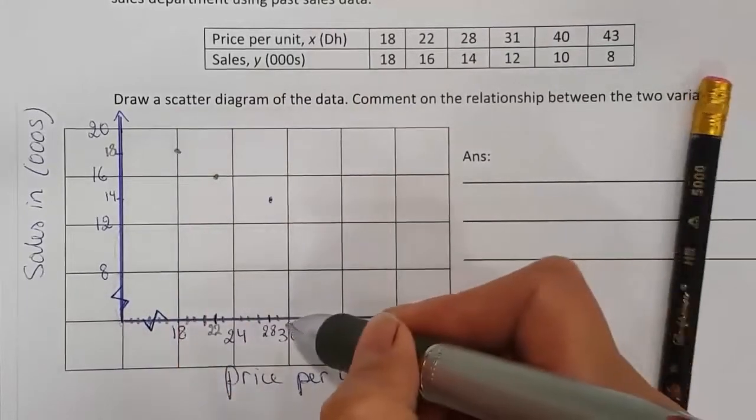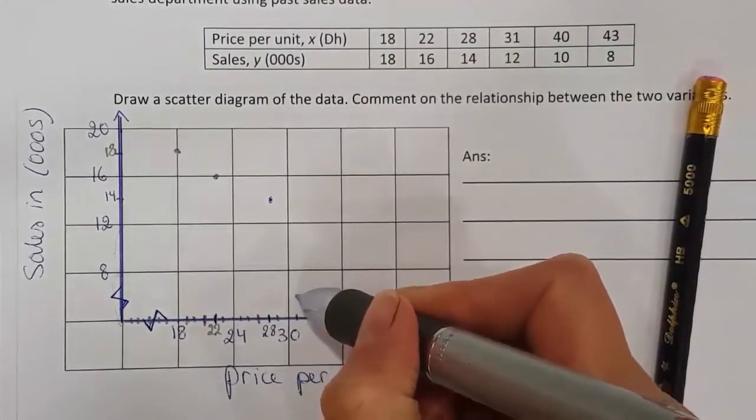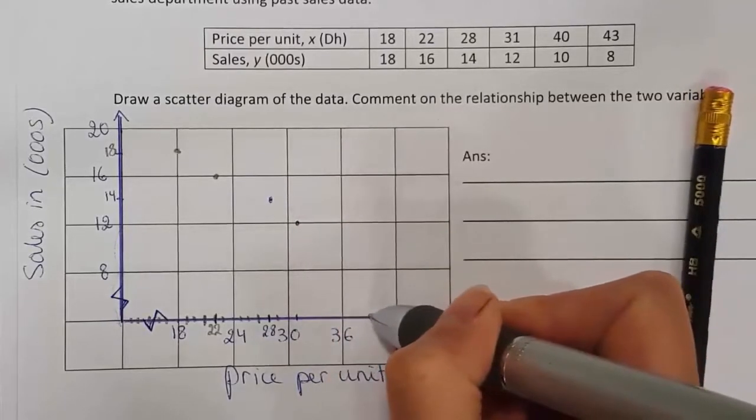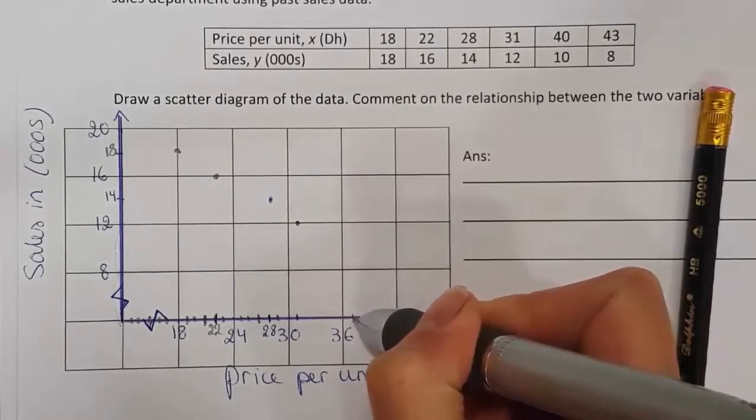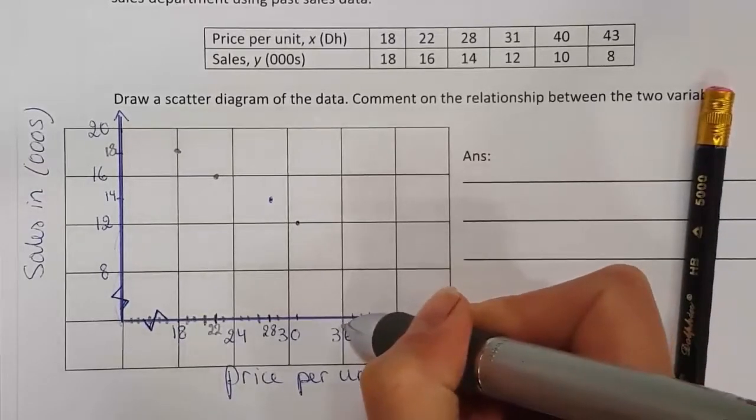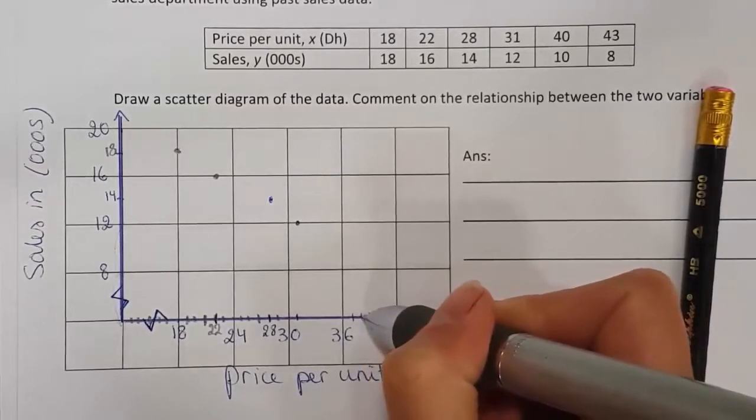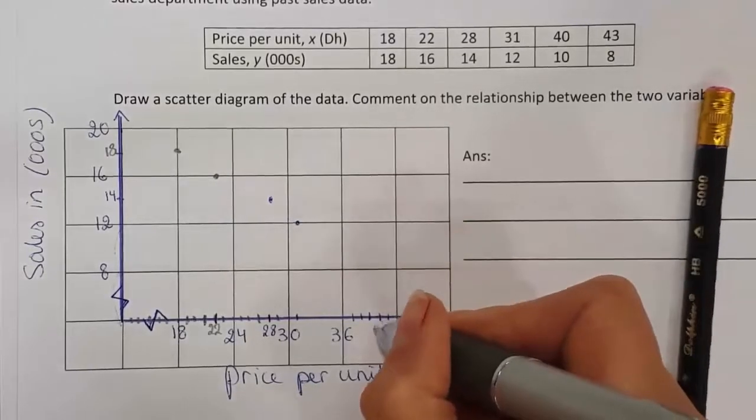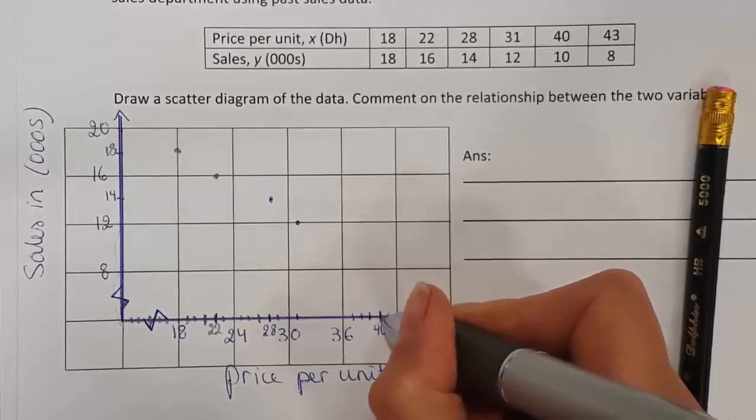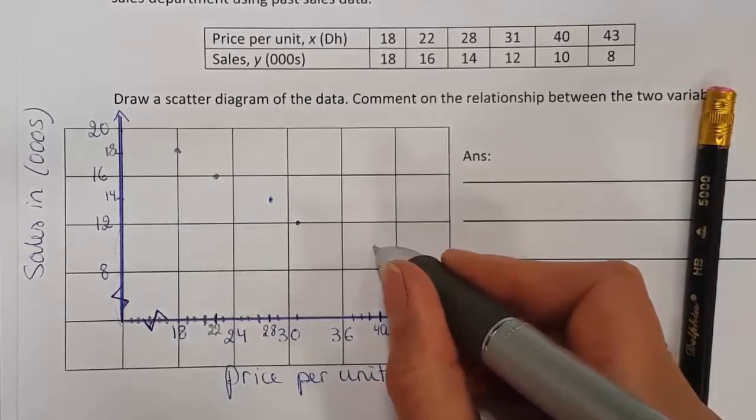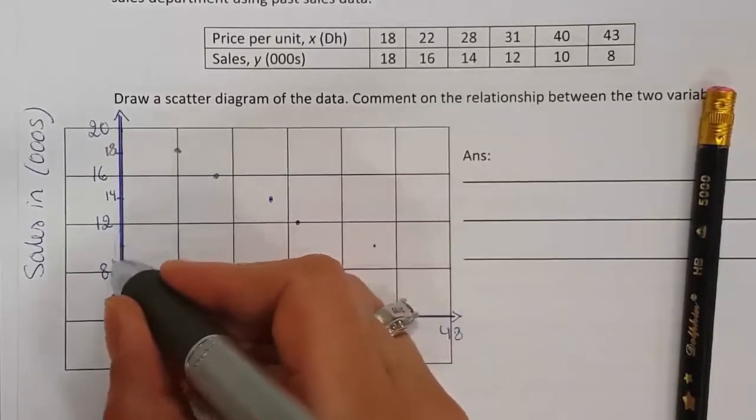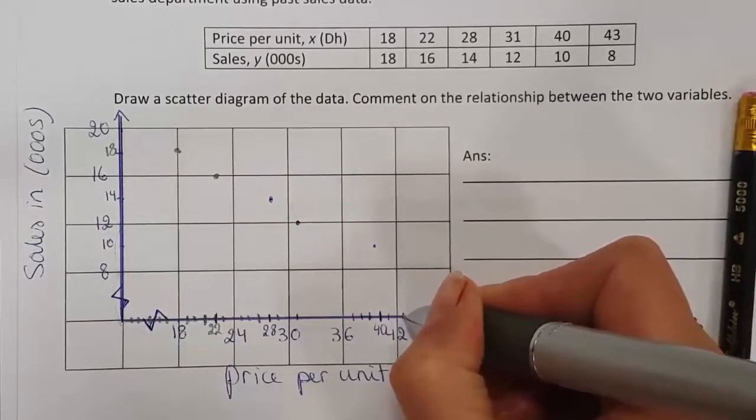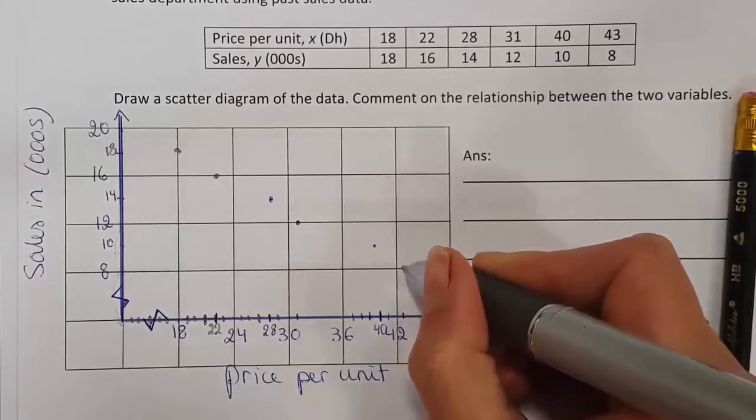14 is right in the middle of 12 and 16. Then we have 31 with 12. Then 40. We're dividing by 6. So 36, 37, 38, 39, 40. 40 with 10. 10 is right in the middle of 8 and 12. And then 43 together with 8.